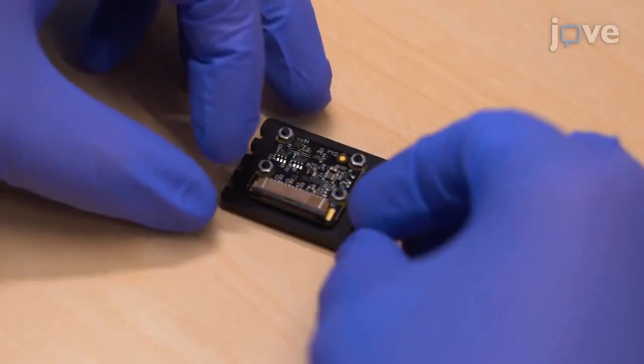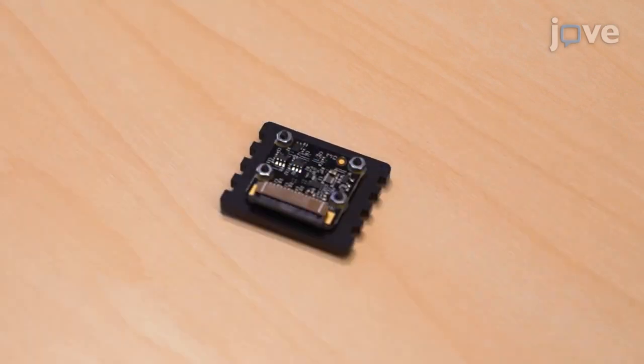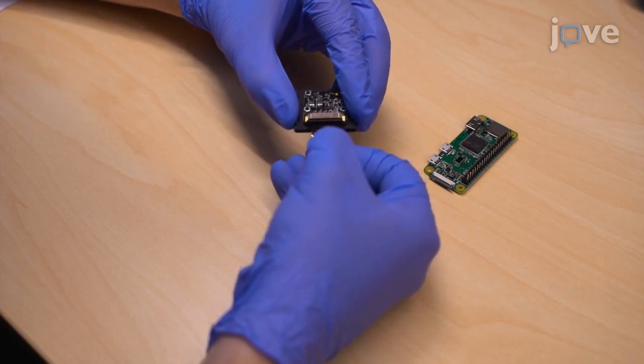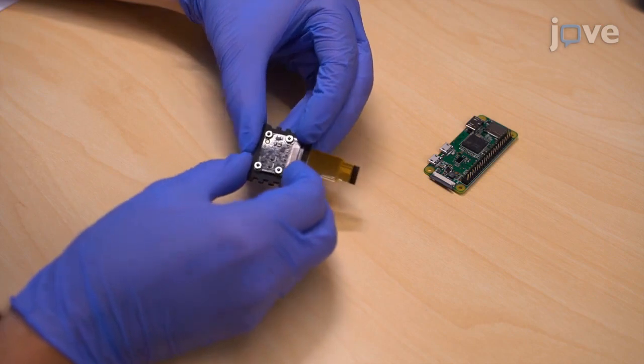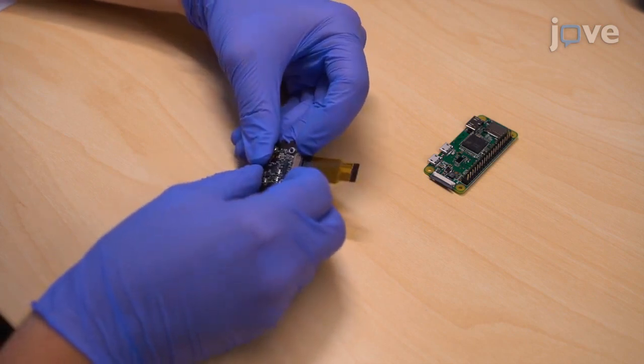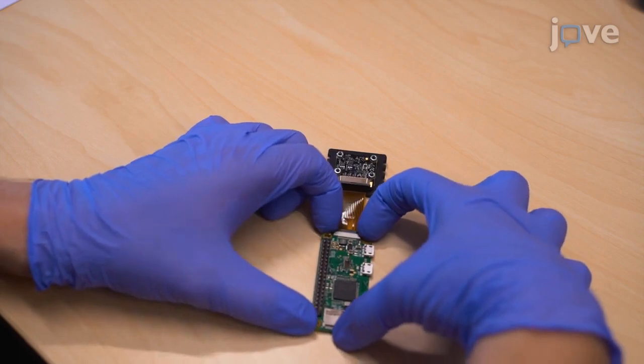Open the ribbon cable ports on the camera module and microcomputer by gently pulling on the edges of their plastic clips. Place the ribbon cable in the open port on the camera module so that the cable's silver connectors face the circuit board. Then, lock it in place by pushing in the plastic clip. Repeat the process with the port on the microcomputer.